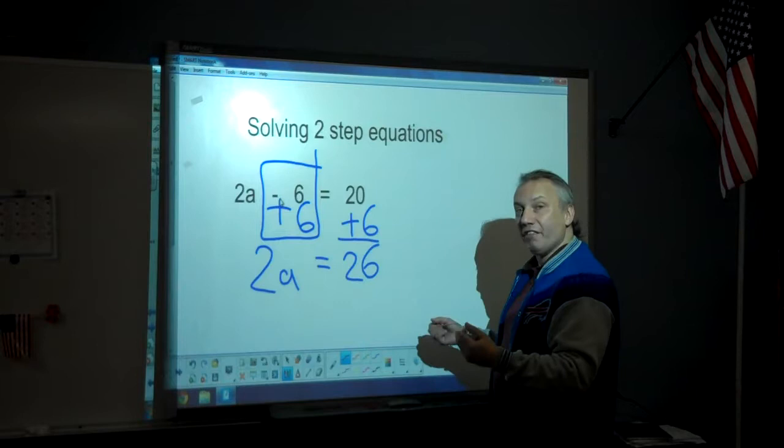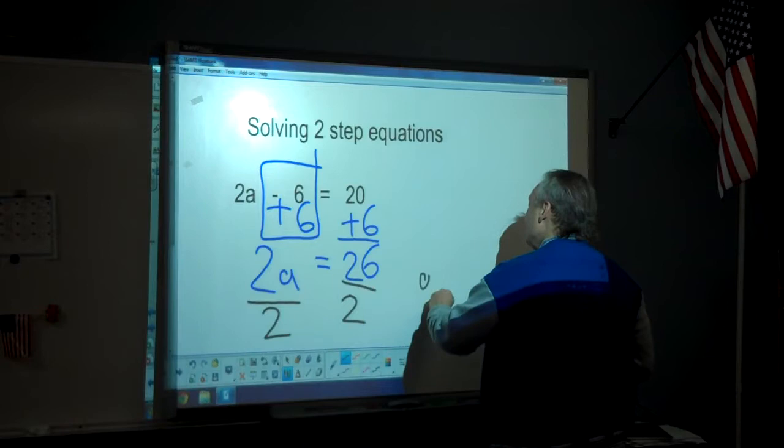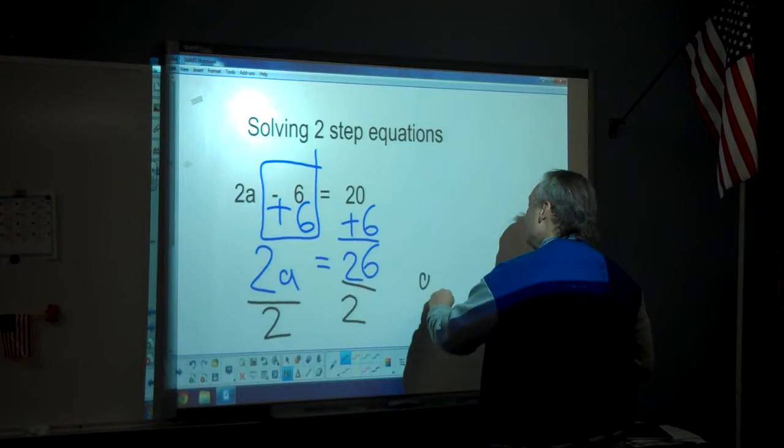Now, the two needs to be eliminated. Since 2a is two times a, then you have to divide both sides by two. That leaves you with a equals thirteen because twenty-six divided by two is thirteen.